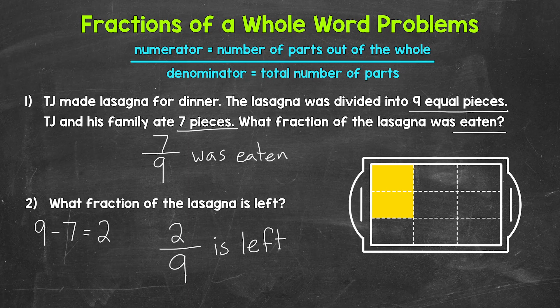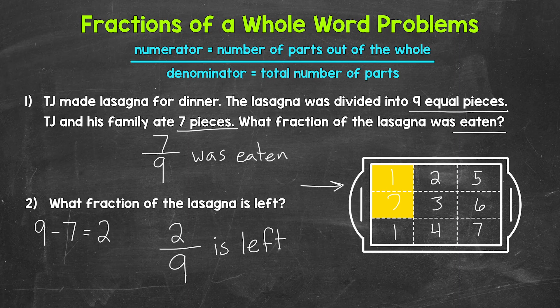We actually have a visual of this situation. There are nine total pieces, with seven pieces that were eaten and two pieces left. The seven pieces that were eaten plus the two pieces that are left equal the nine total pieces — the whole lasagna.